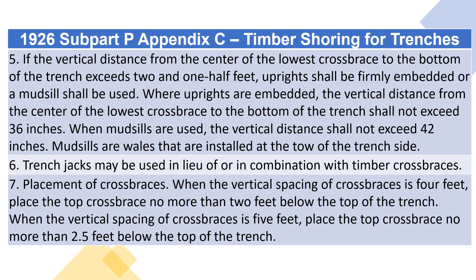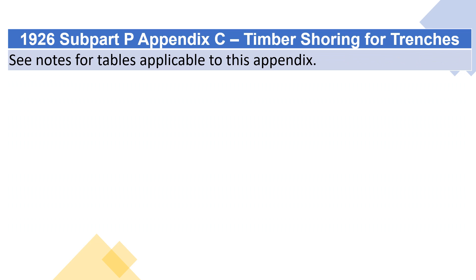7. Placement of crossbraces: When the vertical spacing of crossbraces is 4 feet, place the top crossbrace no more than 2 feet below the top of the trench. When the vertical spacing of crossbraces is 5 feet, place the top crossbrace no more than 2.5 feet below the top of the trench. See notes for tables applicable to this appendix.